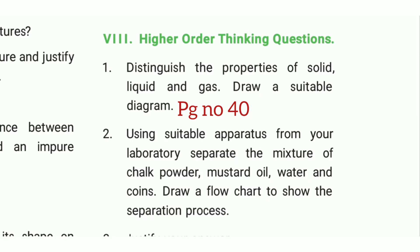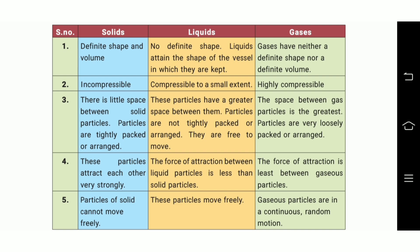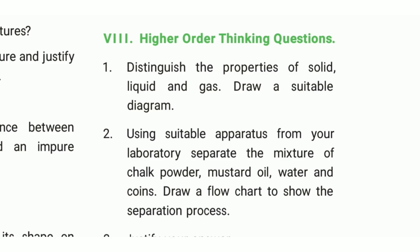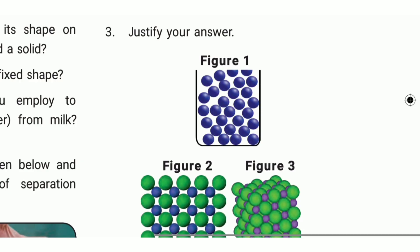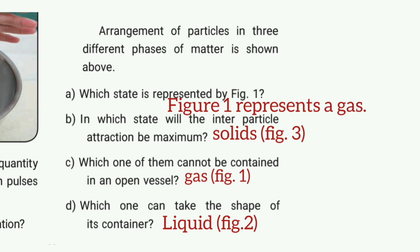Higher order thinking. First one: distinguish the properties of solid, liquid, and gas, and draw a suitable diagram — refer page 40 for a comparison table with 5 points. Second one: draw a flowchart to show the separation process — copy from notes. Third one: justify your answer. Which state is represented by figure 1? Figure 1 represents a gas. In which state is inter-particle attraction maximum? The answer is solids. Which one cannot be contained in an open vessel? The answer is gas. Which one can take the shape of its container? The answer is liquid.